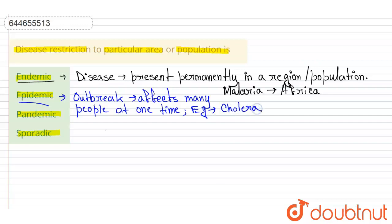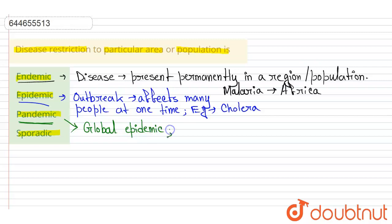The next option is pandemic — a word we hear every day in the present situation. A pandemic is used to describe an epidemic when the spread is global, making it a global epidemic. The best current example of a pandemic is the COVID outbreak.